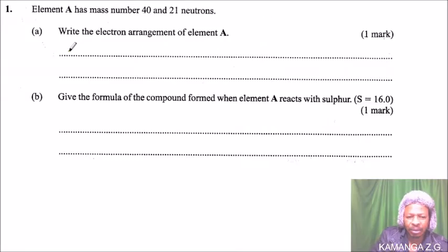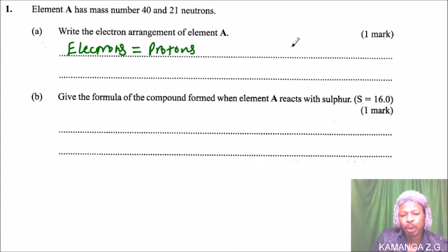The electrons equals the number of protons. In this case, the number of protons equals 40 minus 21, so that will give you 19.